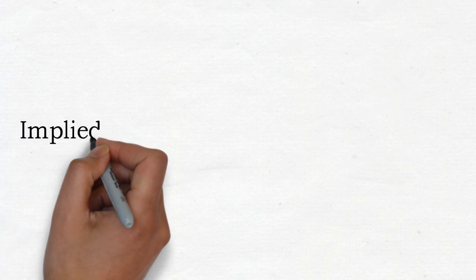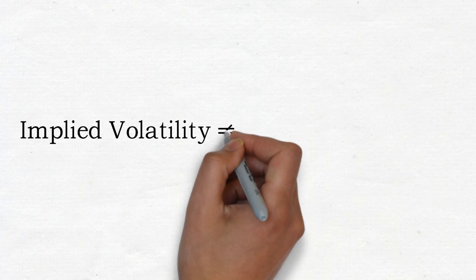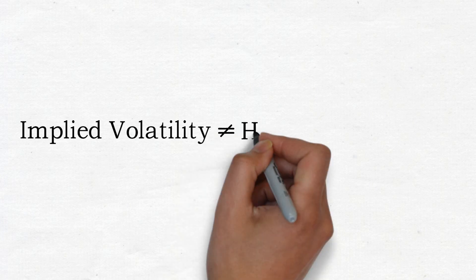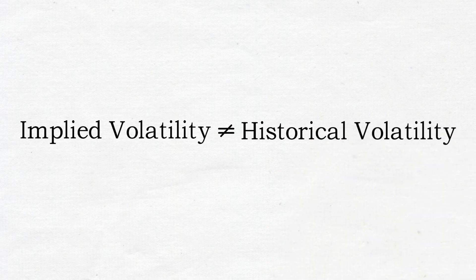Note that implied volatility is not the same as historical volatility. Historical volatility is the past actual volatility and it does not affect the options price, whereas implied volatility does.